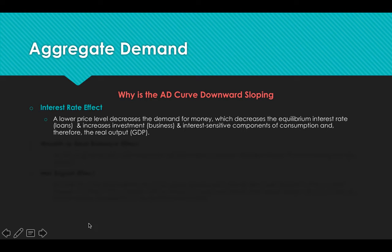First is the interest rate effect. As prices go down, people don't need as much money, and the interest rate becomes lower. At a lower interest rate, more businesses want to invest. Consumers are going to buy more things on interest — refrigerators, large purchases — and so output is going to increase.